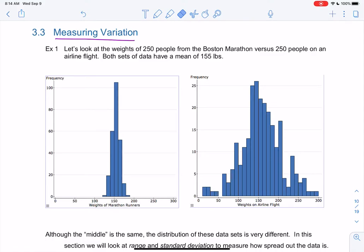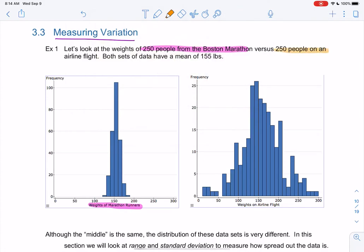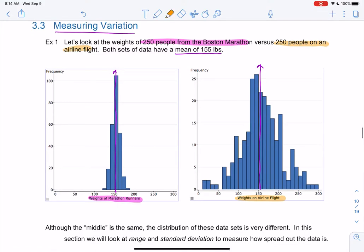So let's look at two histograms below. We have the weights of 250 people from the Boston Marathon on the left, and then we have the weights of 250 people on an airline flight on the right. And it turns out both of these have the same average of 155. So that's right around the middle of these. So they have the same average or the same center, but I think we can all agree that the distribution is very different, right? These two graphs do not look the same.